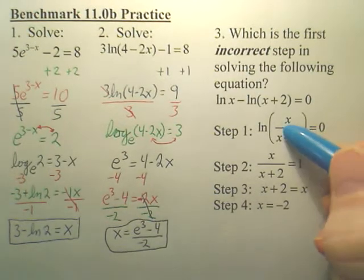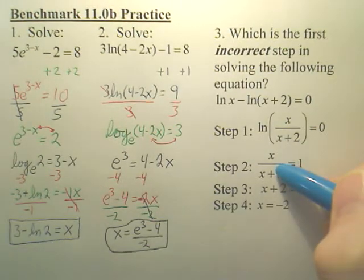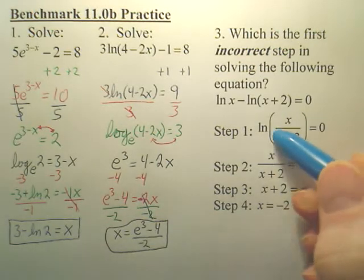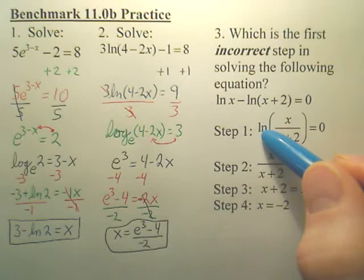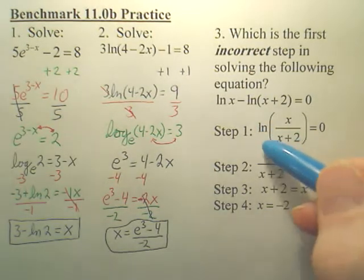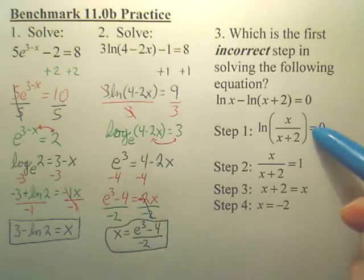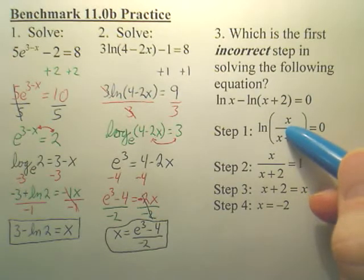Next, how do you get from 1 to 2? That's kind of hard for people, but technically, here's what happened. This right here, isn't this log base E? So if this is log base E, isn't this E to the 0 equals this inside? What's E to the 0?